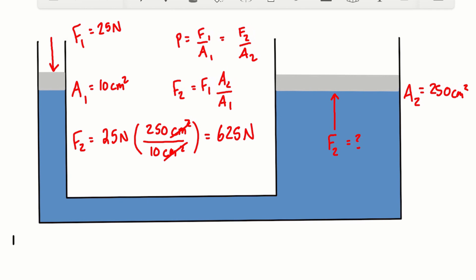So let's take a look at the pressure on side one. Let's call it P1. And this is equal to F1 over A1, the force over the area. So the force was 25 newtons, and the area was 10 centimeters squared.